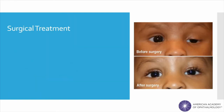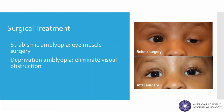If the cause of amblyopia is severe enough, treatment may require surgical intervention. For strabismus, eye muscle surgery can be done to straighten the eyes so the two eyes can work together. For severe cases of deprivation amblyopia, surgery is done to remove the obstacle from the child's vision. For example, cataract surgery to remove a dense cataract, or eyelid surgery seen in this picture to the right. After surgery, the child may still need glasses or patching of the good eye to fully treat the amblyopia.